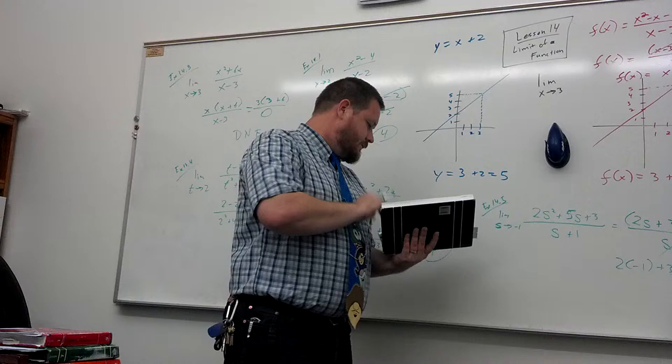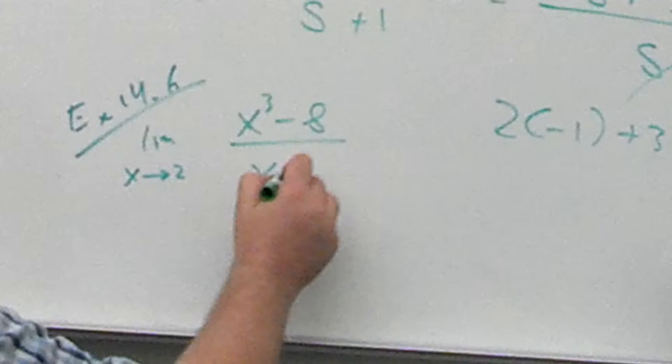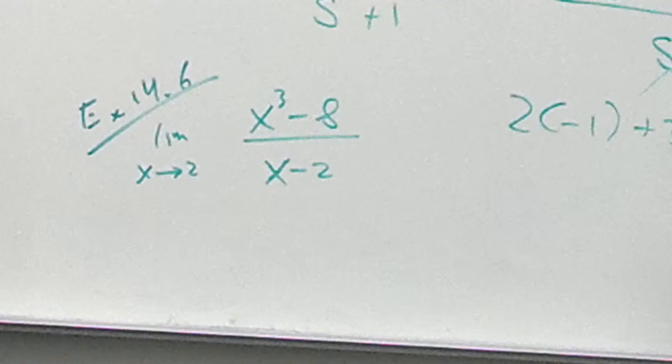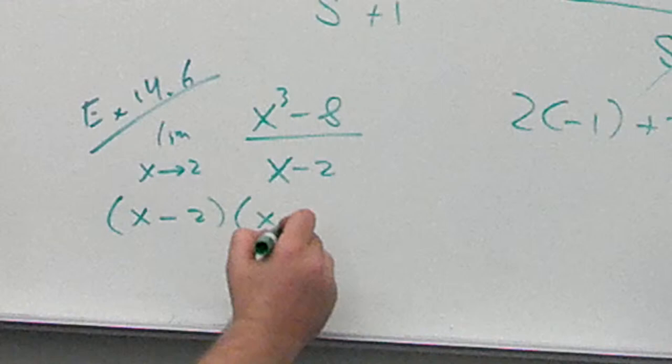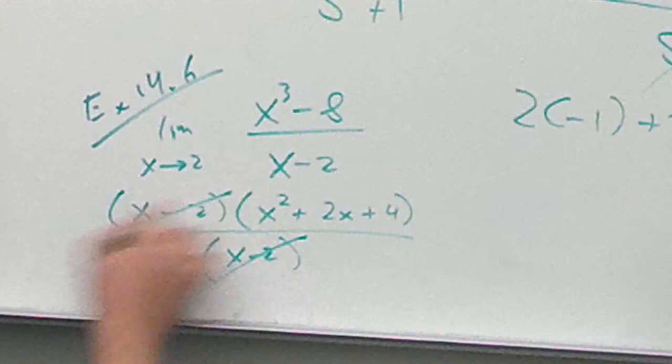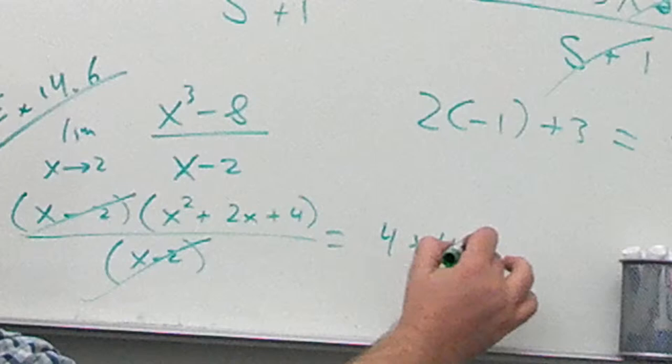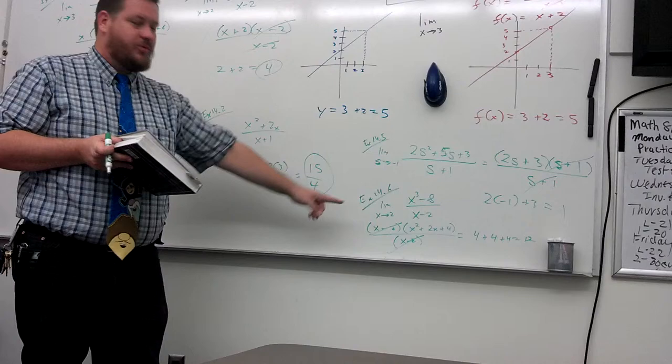Example 14.6. We've got the limit as x approaches 2 of x cubed minus 8 over x minus 2. Can I just plug in the 2? Nope. I'm going to get a 0 for the denominator. Can I factor the numerator here? Yes. Now you have to recognize certain algebra 2 level patterns. This is the difference of 2 cubes. (x minus 2)(x squared plus 2x plus 4). So those are going to cancel. And now I can just plug in 2 and I get 2 squared plus 2 times 2 plus 4 equals 12.